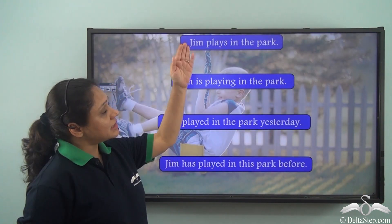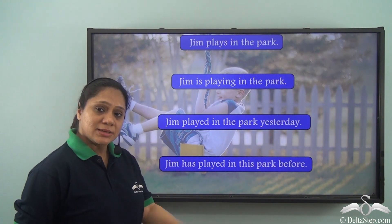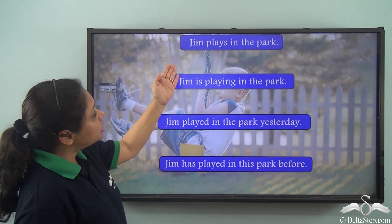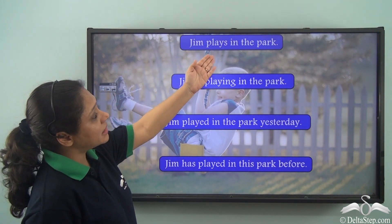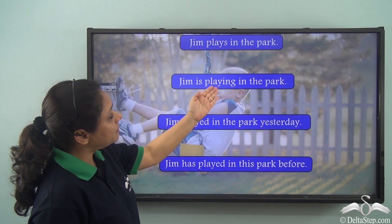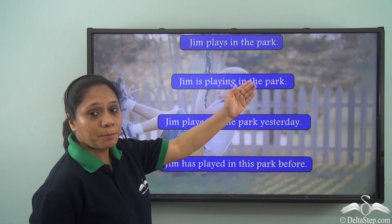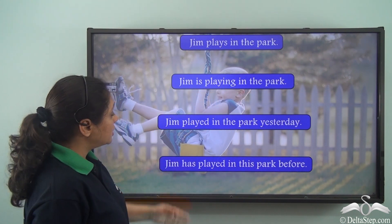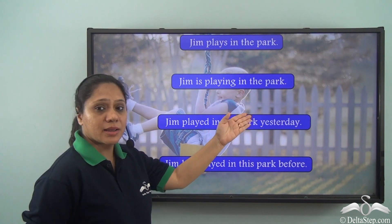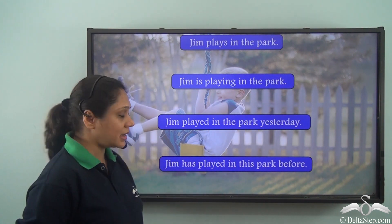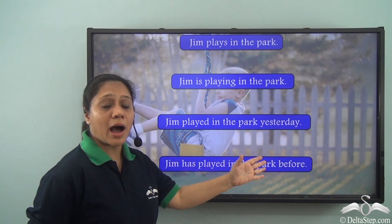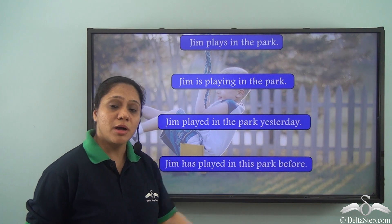Now let us read these sentences. Jim plays in the park. Jim is playing in the park. Jim played in the park yesterday. Jim has played in this park before.